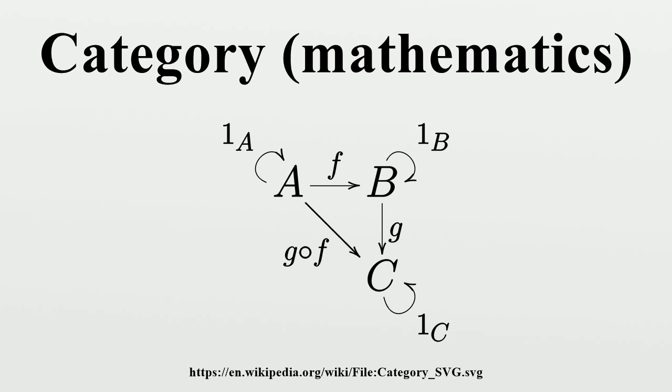A category is called complete if all limits exist in it. The categories of sets, abelian groups and topological spaces are complete. A category is called Cartesian closed if it has finite direct products and a morphism defined on a finite product can always be represented by a morphism defined on just one of the factors. Examples include SET and CPO, the category of complete partial orders with Scott continuous functions. A topos is a certain type of Cartesian closed category in which all of mathematics can be formulated. A topos can also be used to represent a logical theory.